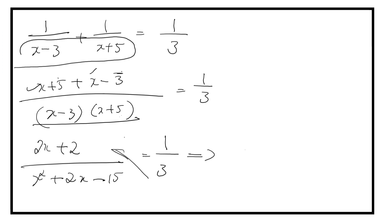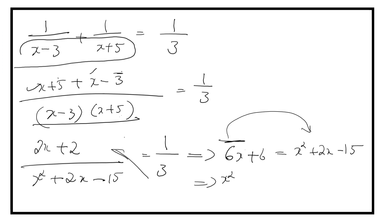Cross multiplying: 3 into 2X gives 6X, and 3 into 2 gives 6, equal to X square plus 2X minus 15. Transposing to one side: X square plus 2X minus 6X minus 15 minus 6 equals 0, which gives X square minus 4X minus 21 equals 0. This is in the standard form.